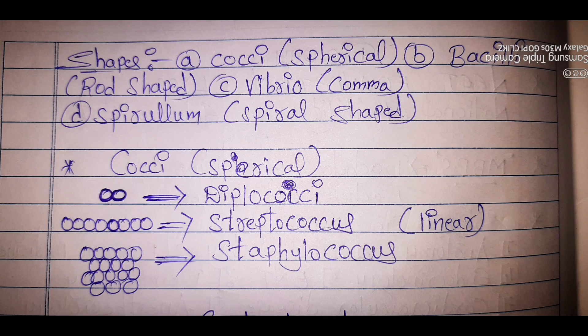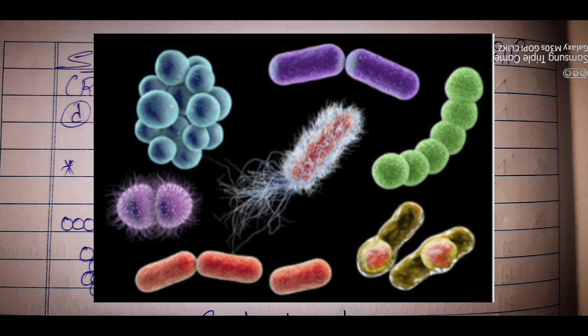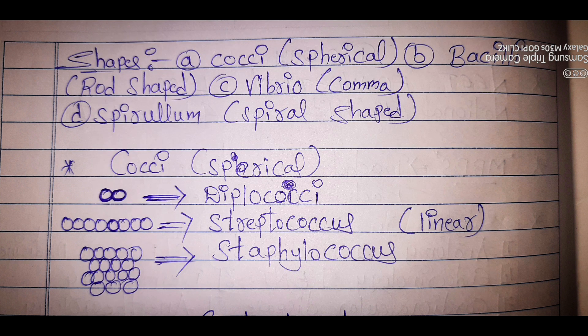Monerans have different shapes: Cocci, that is spherical; Bacilli, rod shaped; Vibrio, comma shaped; and Spirillum, that is spiral shaped. If spherical cocci bacteria are combined in two, that is called diplococci. If they are joined linearly in more numbers, that is streptococcus. If they are in colonial form, we call it staphylococcus.